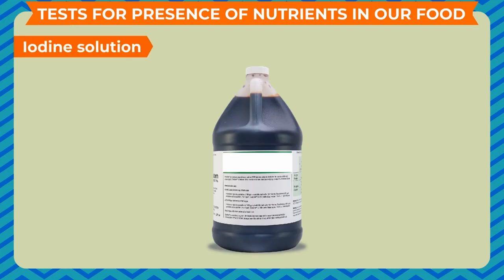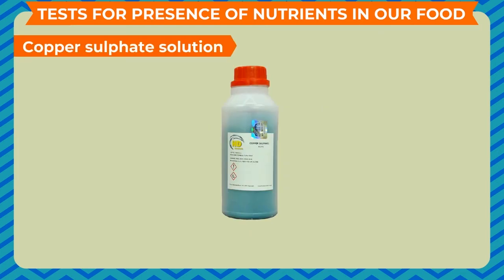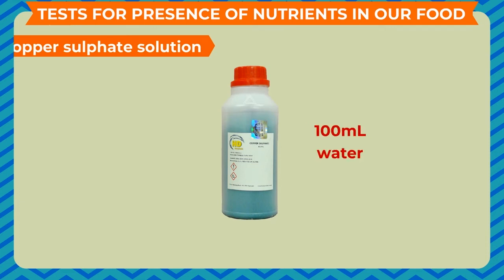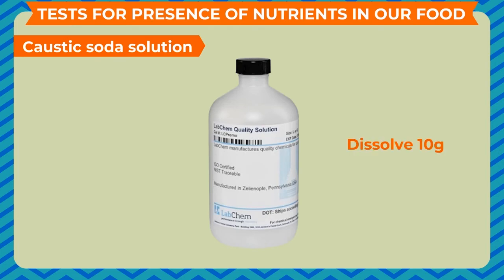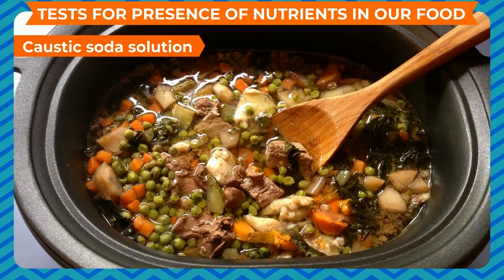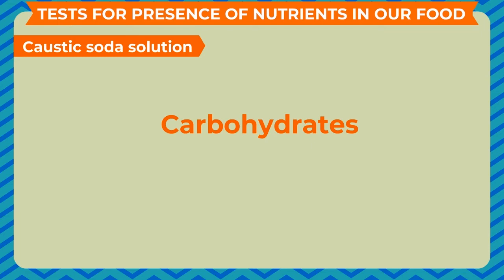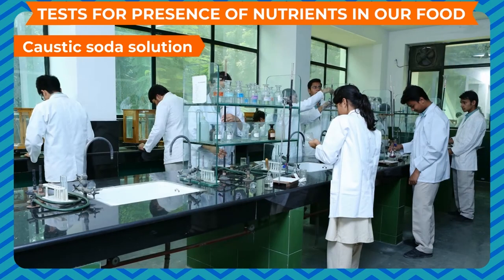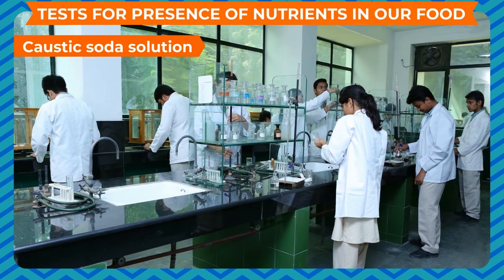To prepare solutions: for iodine solution, add four to five drops of tincture iodine (available at any chemist shop) in 10 milliliters of water. For copper sulfate solution, dissolve 2 grams of copper sulfate crystals in 100 ml water. For caustic soda solution, dissolve 10 grams of caustic soda in 100 milliliters of water. Dilute sodium hydroxide solution from the laboratory can also be used. With these solutions, you can test either raw or cooked food items. Perform the tests in the presence of your teacher and do not smell or taste any chemical.